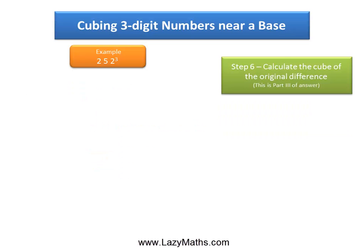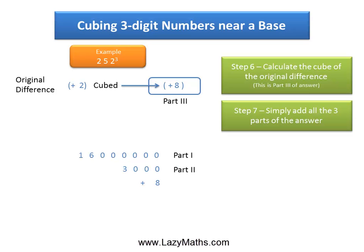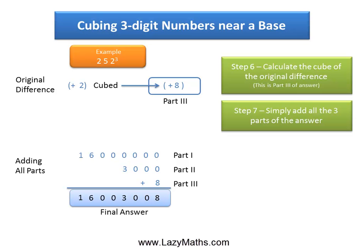Lastly, to get Part 3 of the answer, we simply take the original difference, plus 2, and cube it — so 2 times 2 times 2 equals 8, and this becomes Part 3 of the answer. Now simply take all the parts and add all of them together, and we get the final answer, which equals 16,003,008. So 252 cubed equals 16,003,008. And that's it. Thank you.